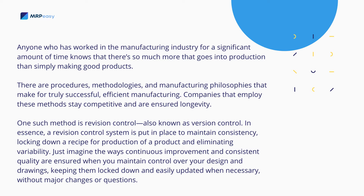One such method is revision control, also known as version control. In essence, a revision control system is put in place to maintain consistency, locking down a recipe for production of a product and eliminating variability. Just imagine the ways continuous improvement and consistent quality are ensured when you maintain control over your design and drawings, keeping them locked down and easily updated when necessary.